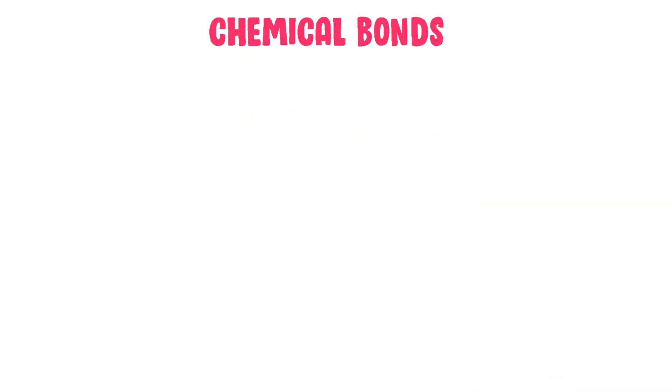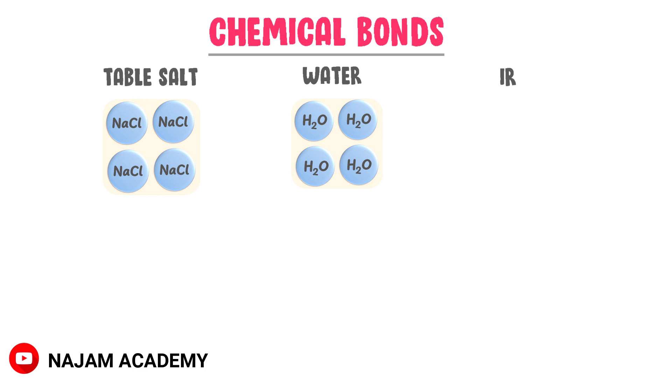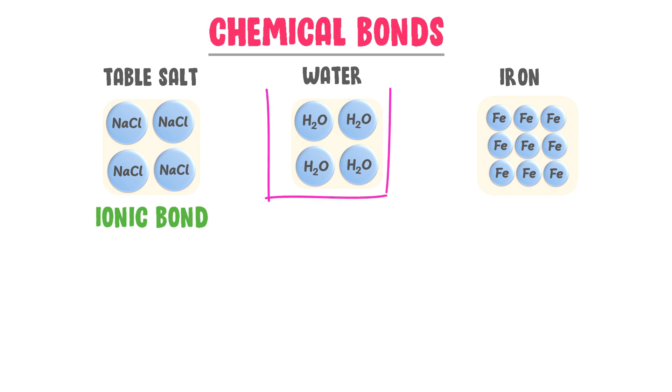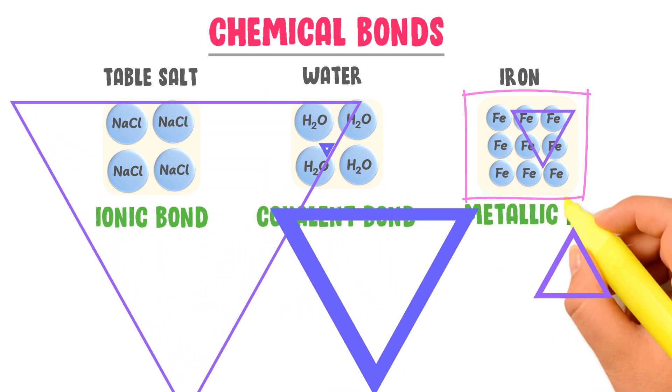Firstly, let me teach you the basic concept of chemical bonds. Consider table salt, water, and pure iron sheet. We know that table salt contains ionic bond, water contains covalent bond, and iron sheet contains metallic bond.